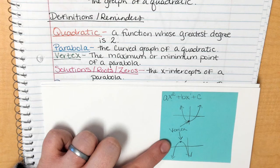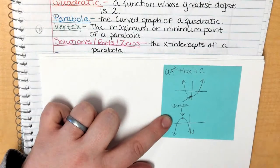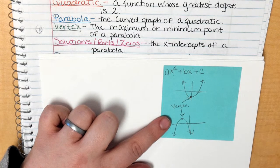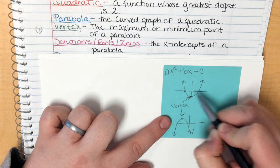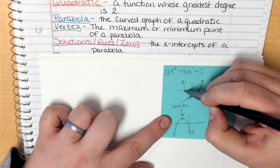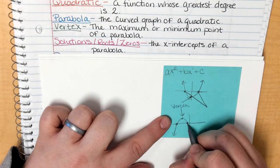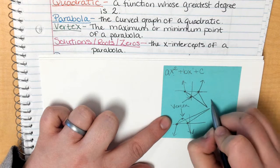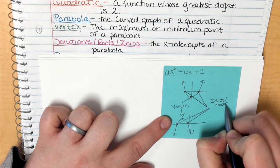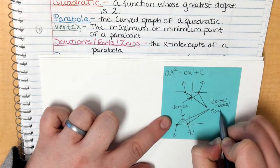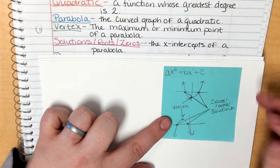The next key term covers solutions, roots, and zeros. You need to know all three names — they are very important and interchangeable. They are the x-intercepts of your parabola. Both crossing points on the x-axis are called zeros, roots, and solutions, so please pay attention to all three names.